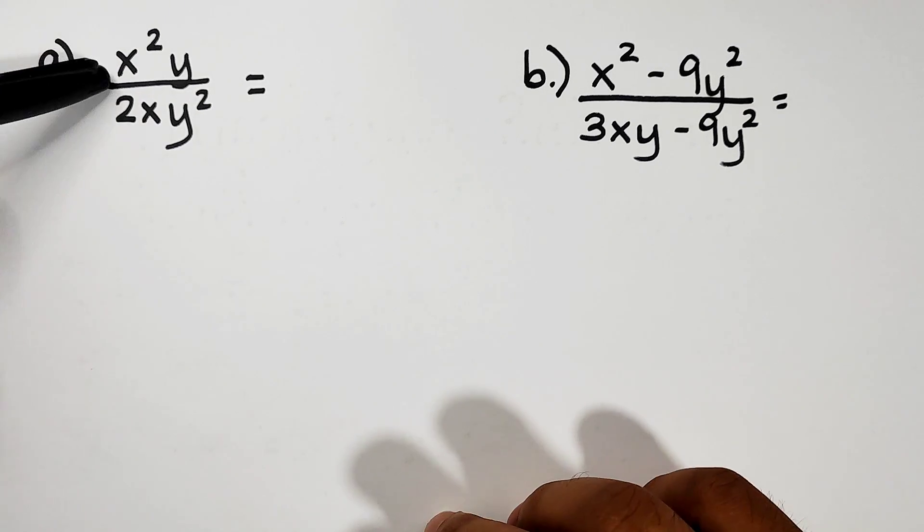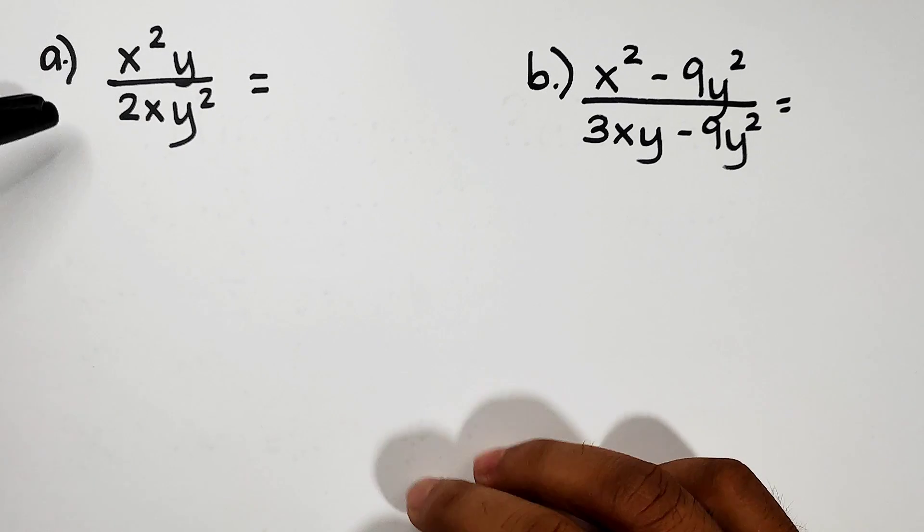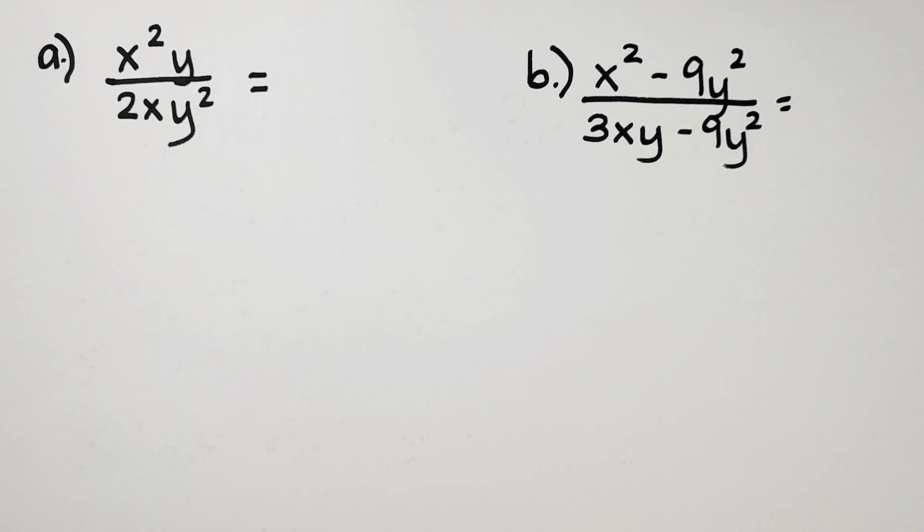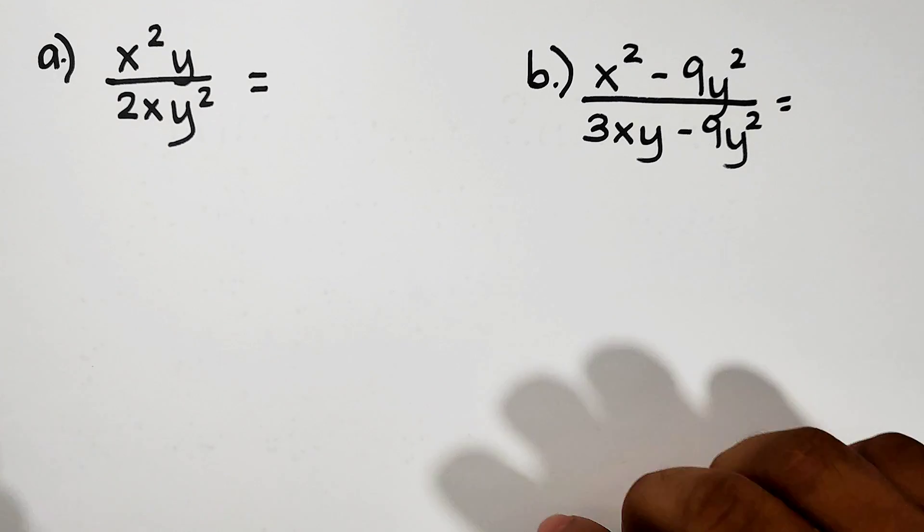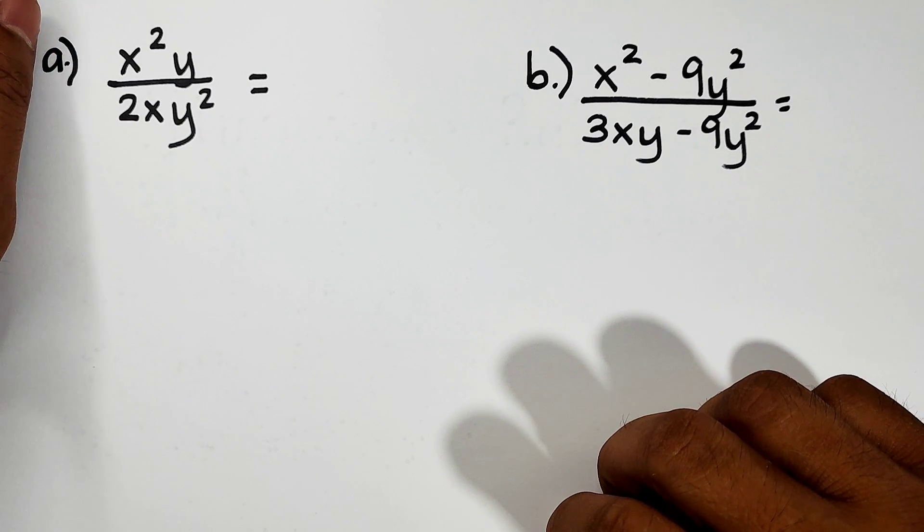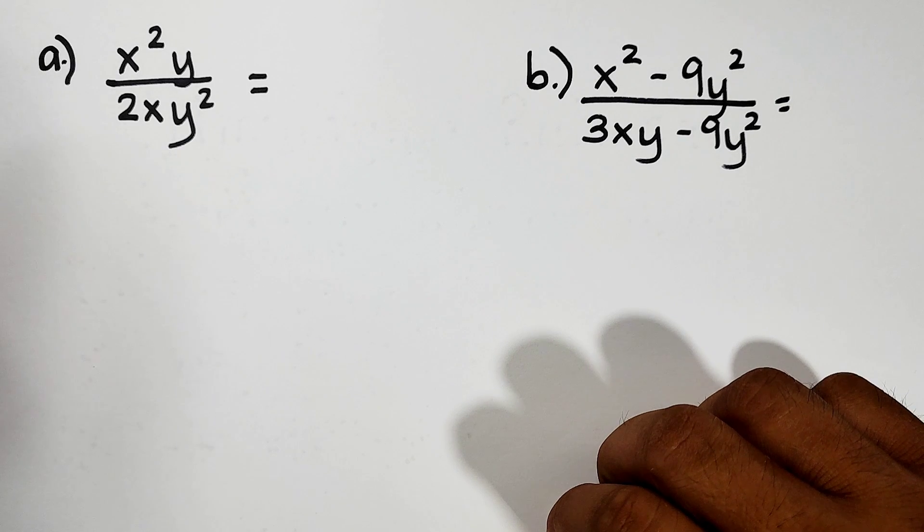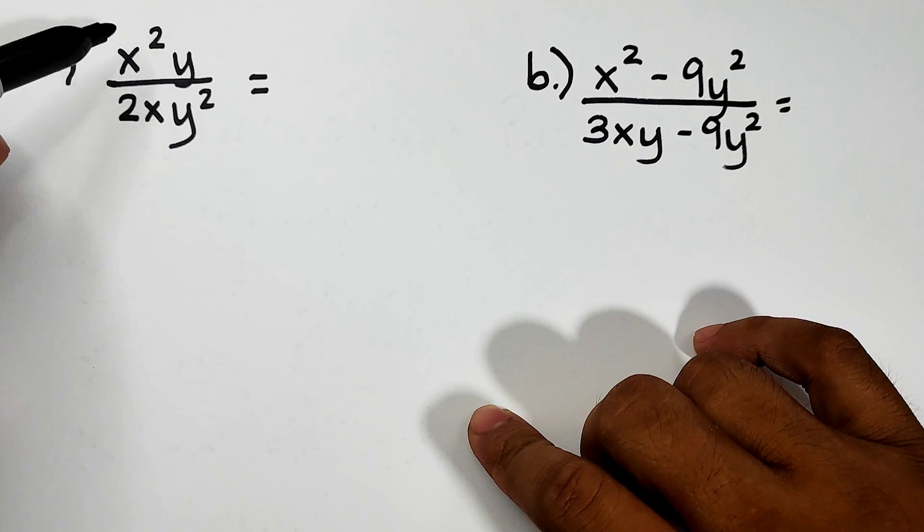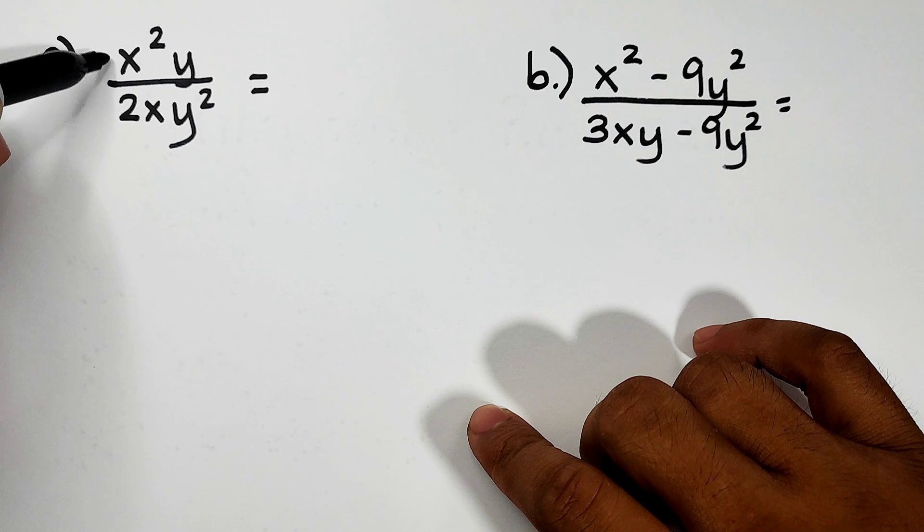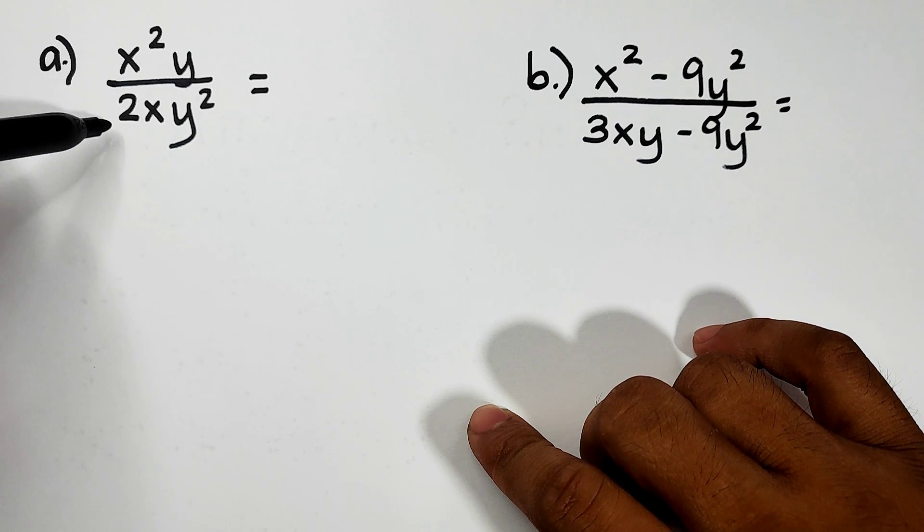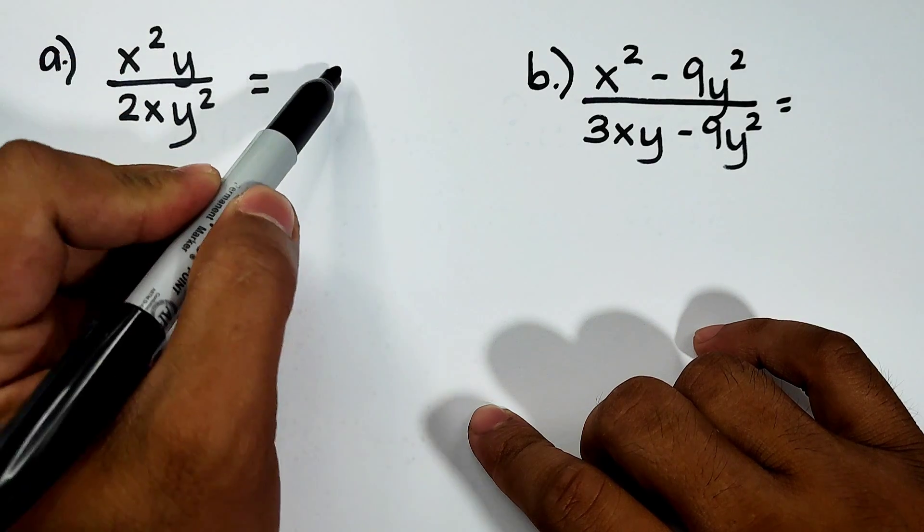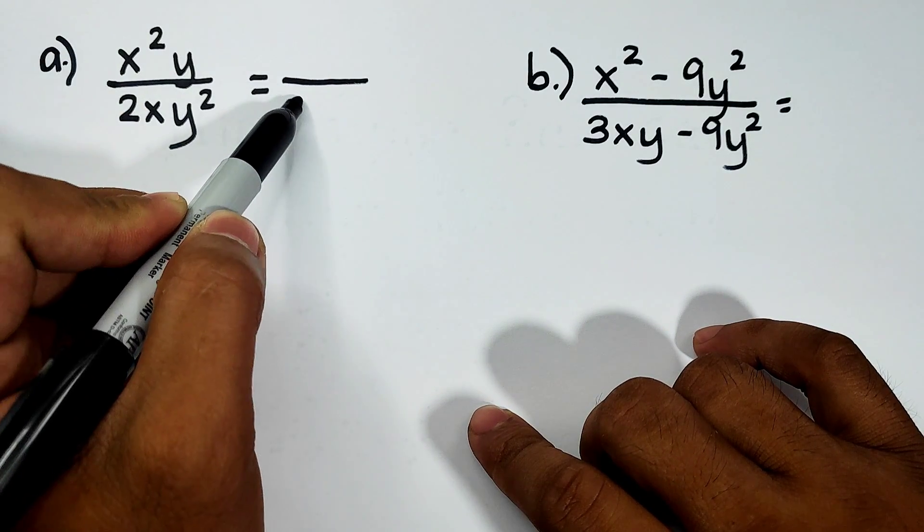In letter A, we have x²y over 2xy². So the key here is that first, you need to know how to simplify fractions. At the same time, you need to know how the laws of exponents work. For the numbers or coefficients, we have 1, invisible 1, and 2 at the denominator. So that is over 2.